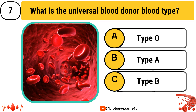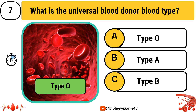The next question: What is the universal blood donor blood type? Options are: Type O, Option B: Type A, Option C: Type B. The answer is Type O.